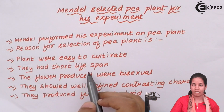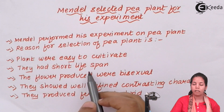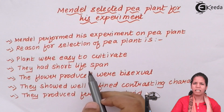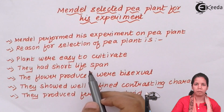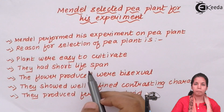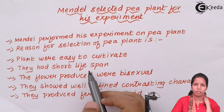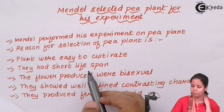The second reason is that the pea plant had a very short lifespan — approximately 4 to 5 months. So in a quarter of a year he could cultivate pea plants multiple times. Within 2 to 3 months you can get pea plant pods, and even smaller pods can be seen as seeds — which would not be possible if he had used a mango tree.